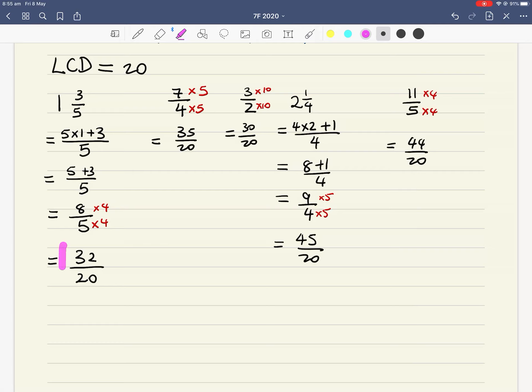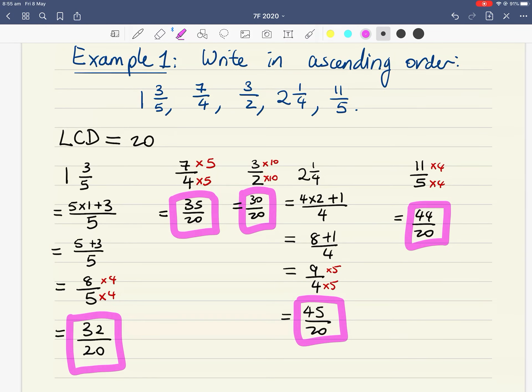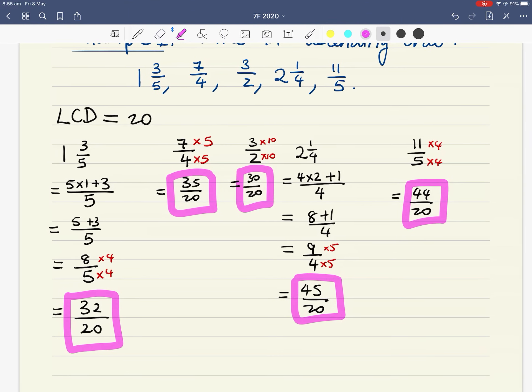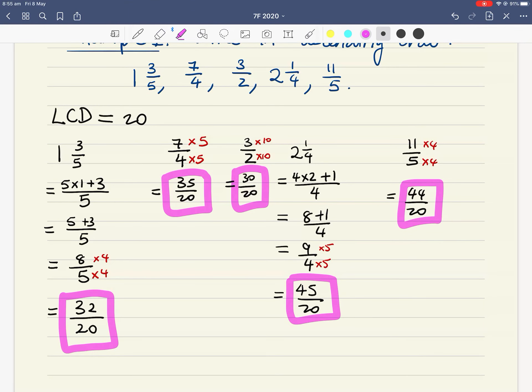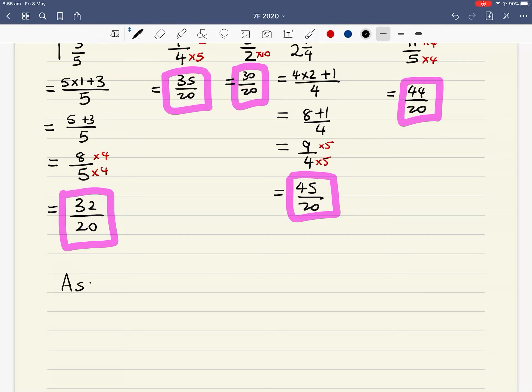Now you look at all the fractions we have. Right now we have 32 over 20, we have 35 over 20, 30 over 20, 45 over 20, and 44 over 20. Our 5 different fractions as improper fractions and the same denominators. Our question wanted us to write in ascending order, from smallest to biggest. So now that everything is the same denominator, look at the top numbers. Which is the smallest top number? Well, between 32, 35, 30, 45, and 44, 30 is my smallest. Then the next smallest is 32, then 35, then 44, then 45.